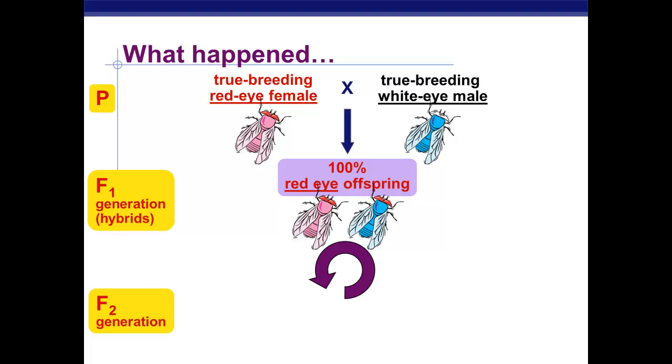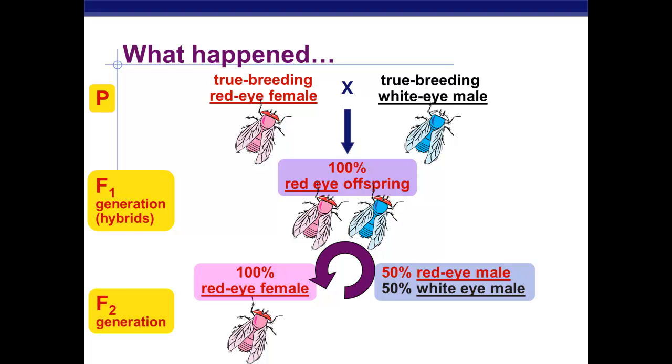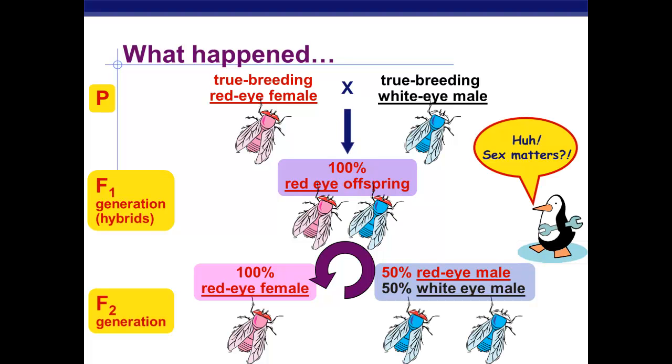But then in the F2 generation, we saw something kind of strange. Instead of the normal pattern of 3 to 1 that we would see, we had 100% red-eyed females, and half red-eyed males and half white-eyed males. So, for some reason, with this particular gene, the sex of the fly mattered. And he had never seen this before.